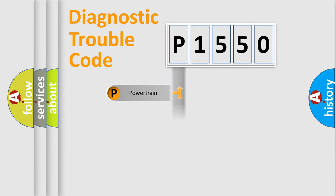Powertrain, Body, Chassis, Network. This distribution is defined in the first character code.